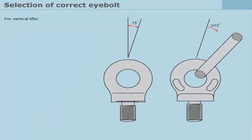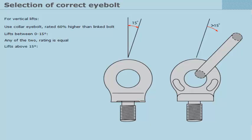For vertical lifts, use collar eye bolt rated 60% higher than linked bolt. Lift between 0 and 15 degrees, any of the two rating is equal. Lift above 15 degrees, use linked eye bolt rated higher than collar.